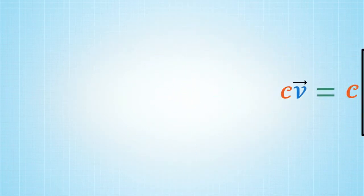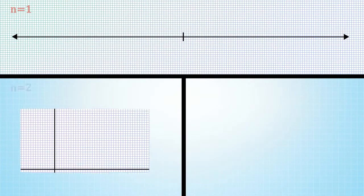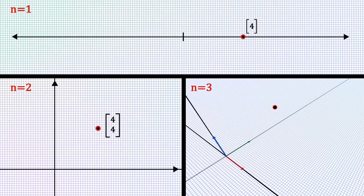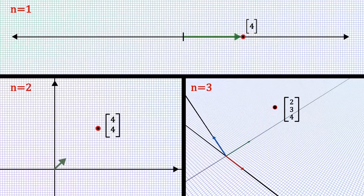For the cases n equal 1, 2, 3, you can visualise vectors geometrically as points in space, or as directed arrows from the origin.